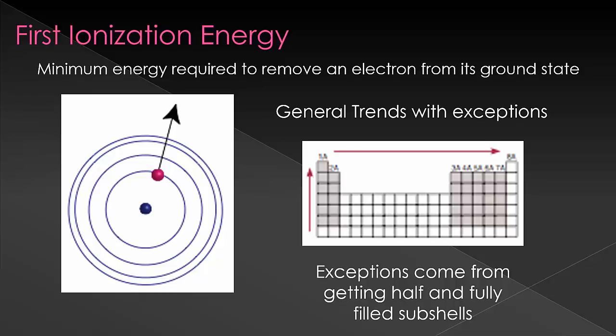The horizontal trend is caused by the increased effective nuclear charge as we go across the periodic table. Since the effective nuclear charge increases as we go to the right, the ionization energy will also increase.